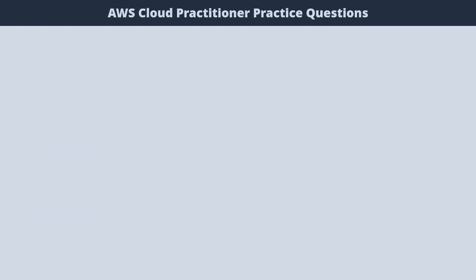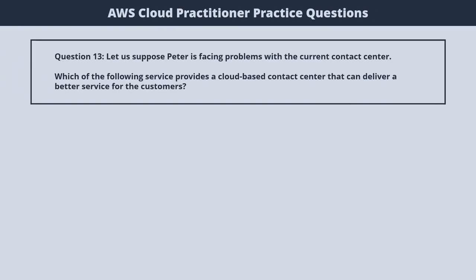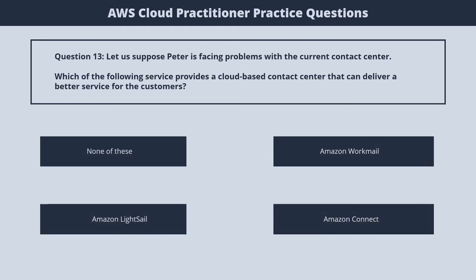Question 13. Peter is facing problems with the current contact center. Which of the following services provides a cloud-based contact center that can deliver better service for customers? 1. None of these. 2. Amazon WorkMail. 3. Amazon Lightsail. 4. Amazon Connect. The correct answer is 4. Amazon Connect.